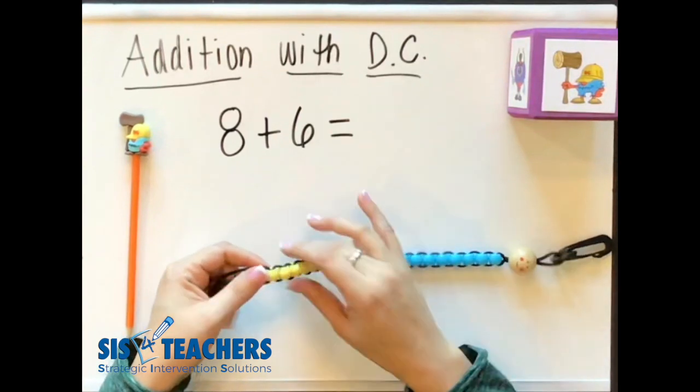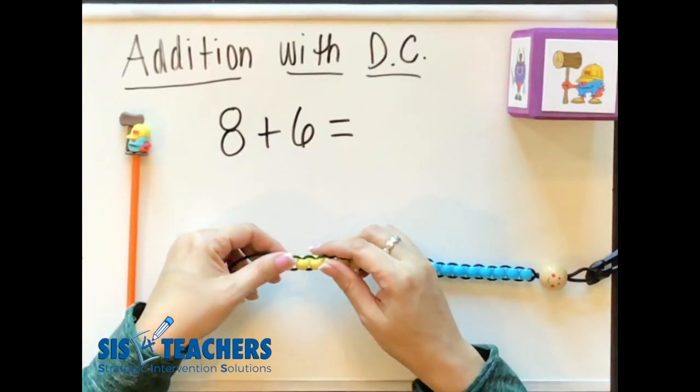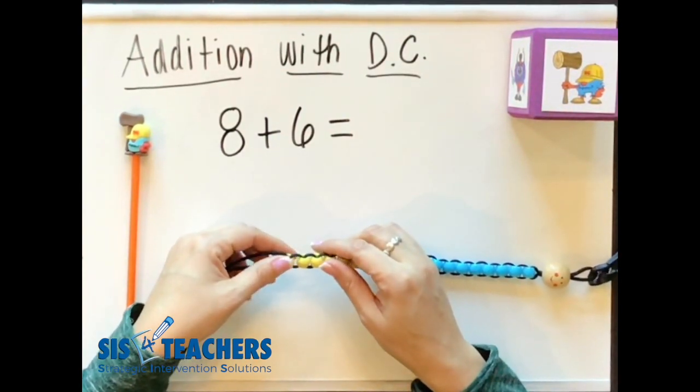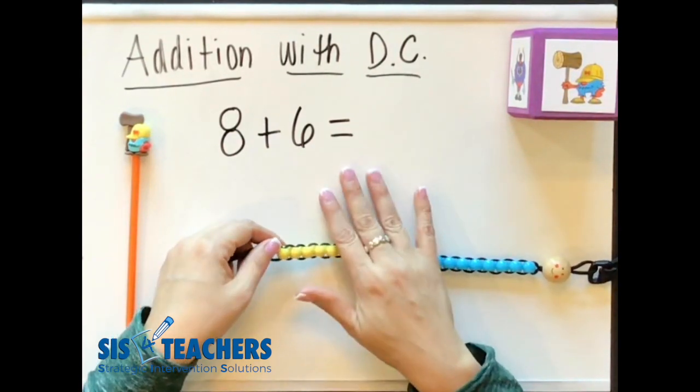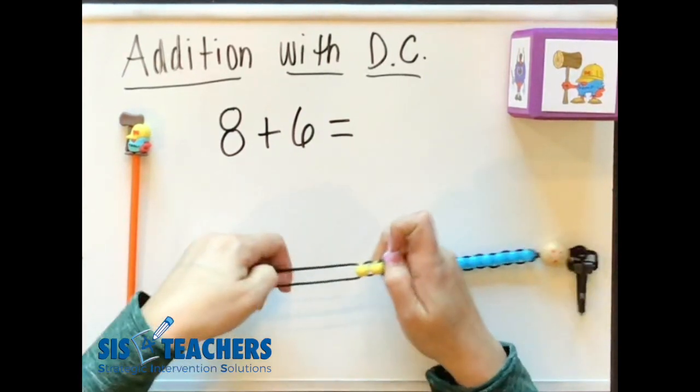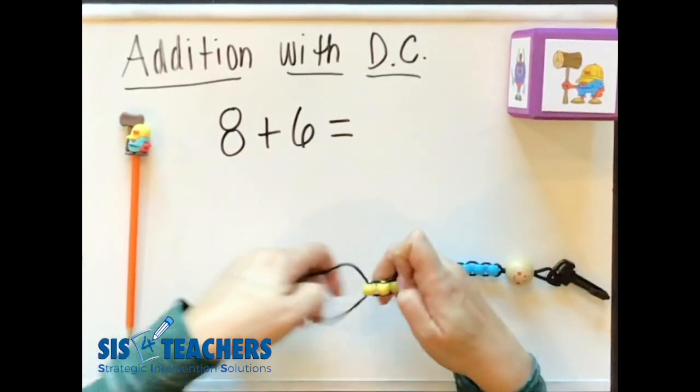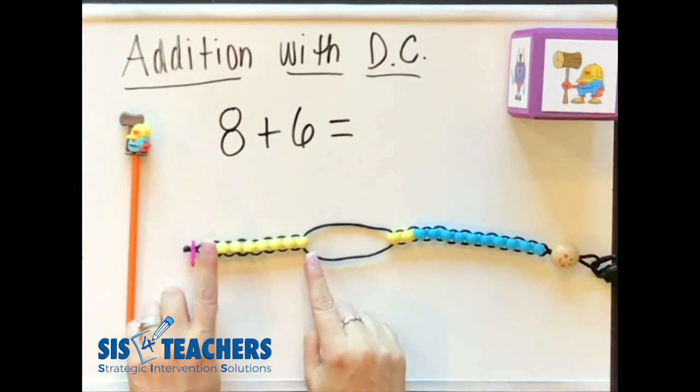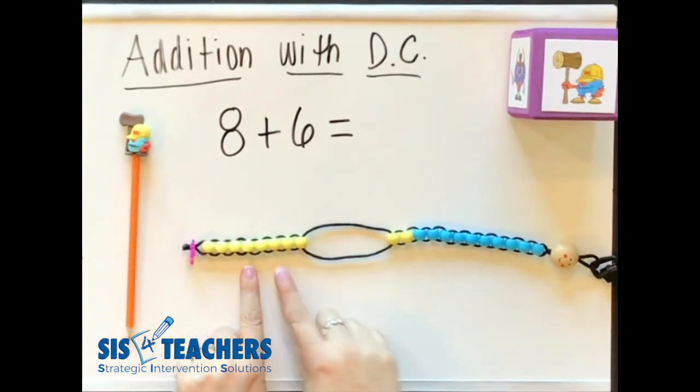When you say make a 10, kids oftentimes are confused. You certainly could use a double 10 frame to show this, but you want students to be able to understand this process in more than one way. So I'm going to go ahead and pull down our first add-in on my buddy, which is going to be 8. I'm going to lay that down here to show that my 8 is represented here.